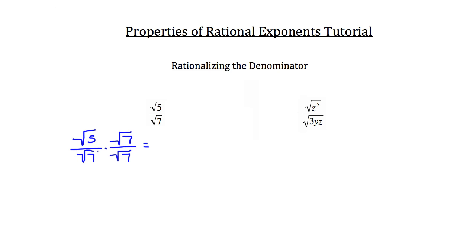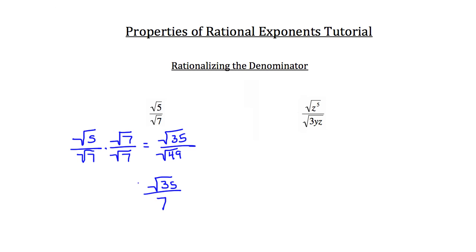When multiplying fractions, you multiply directly across. On the top, we have root 5 times root 7, which is root 35. On the bottom, we have root 7 times root 7, which is the square root of 49. The square root of 35 unfortunately can't be simplified further. However, you know that the square root of 49 is the square root of a perfect square — 7 — so the root of 49 is actually 7.